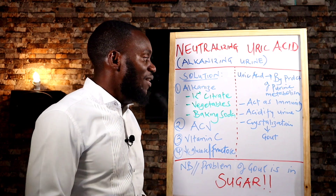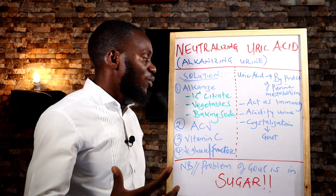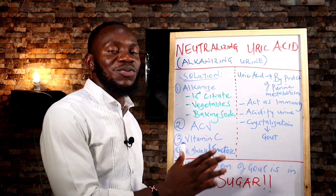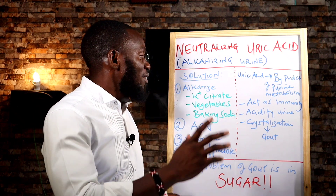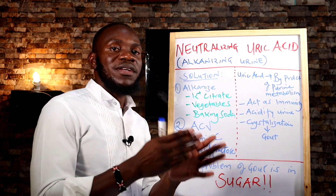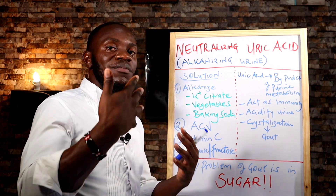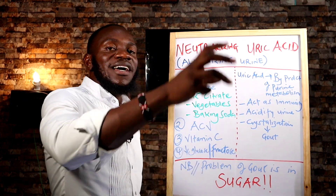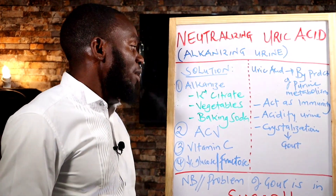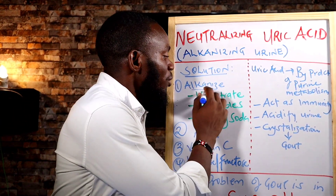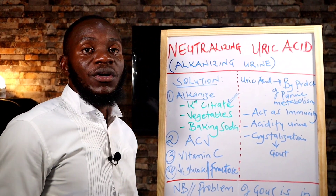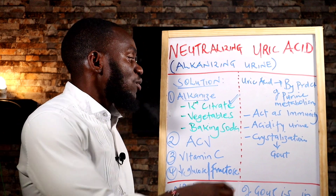Now, when you already have gout — urine is highly acidic, joints are painful — the solution is not running to the pharmacy for drugs. The solution lies in alkalization of urine. Making urine basic means uric acid will be excreted. There are three ways to alkalize your urine: potassium citrate, vegetables, and baking soda.